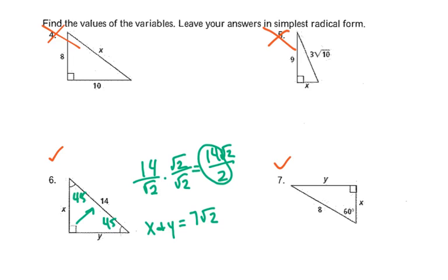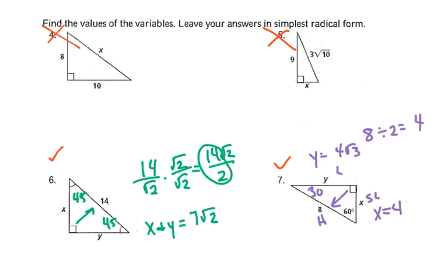For our next one, this is a 30-60-90. We have the hypotenuse, so what we need to find is our short leg and our long leg. Because we have our hypotenuse, we divide by 2, which gives us our short leg, which will be 4. So X will equal 4, and our Y will equal 4 radical 3. Awesome job, you guys.